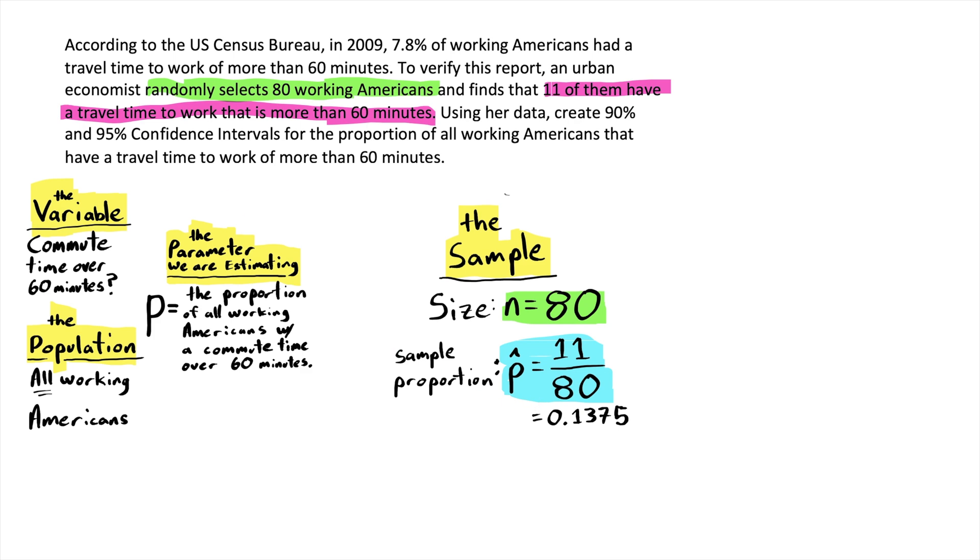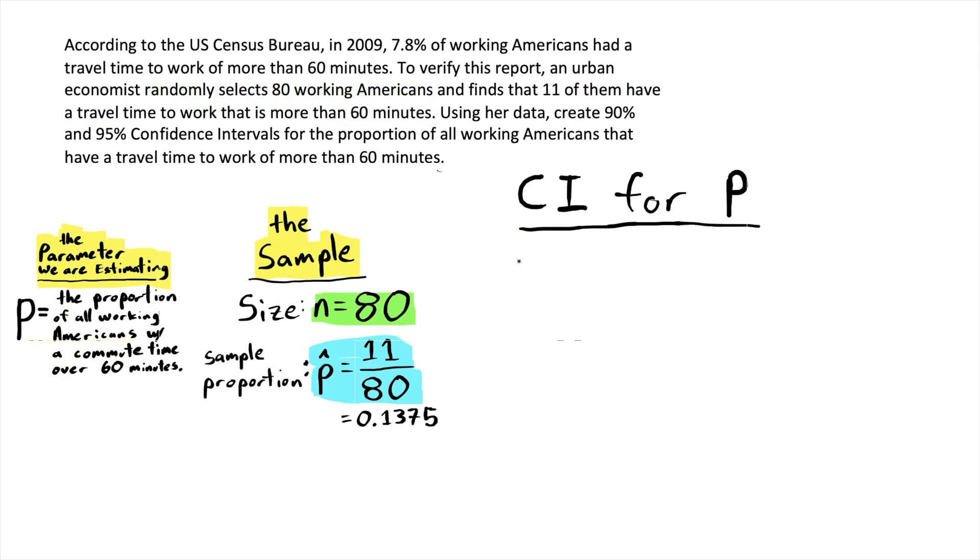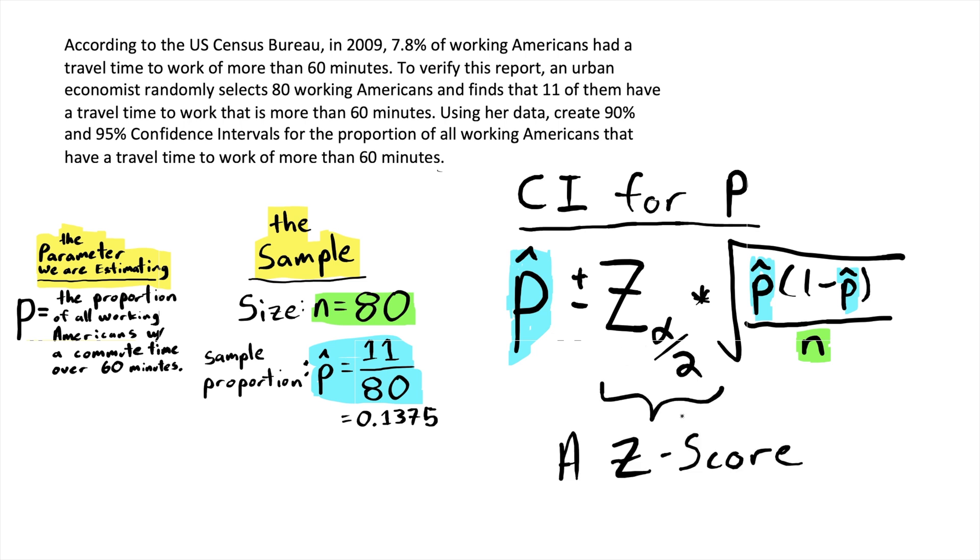So now we're ready to get started on our confidence interval itself. And the formula starts out with our sample proportion right in the middle, and then we add and subtract something that I'm going to write as z of alpha over 2, and we multiply that by the square root of p hat, our sample proportion, times 1 minus p hat, and that is divided by the sample size. And you'll notice that there are three numbers you need for this formula: p hat, which we determined already, the sample size which we've set is 80, and then lastly we need this z of alpha over 2, a percentile from a standard normal distribution. Every time you change the level of confidence, you get a different value of z of alpha over 2. So let's look at where this number is going to come from.